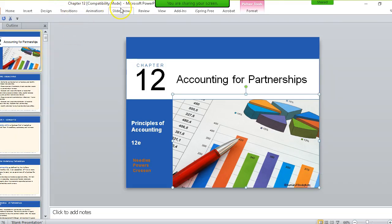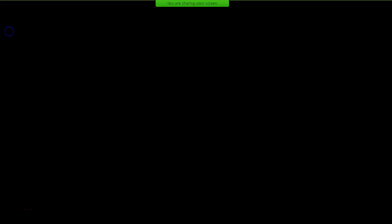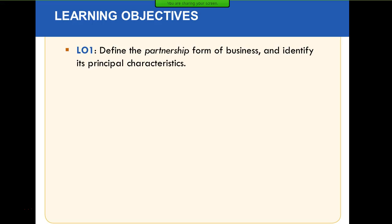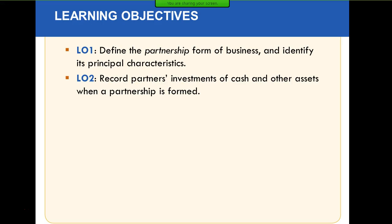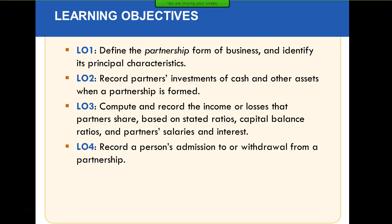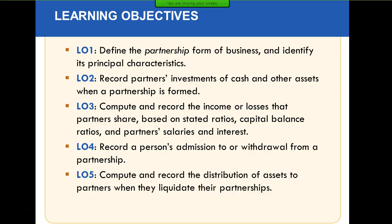We are going to talk about partnerships and go through a bunch of problems just like we have done in class. We'll cover what partnerships are, the benefits of partnerships, how we record the initial capital that partners put into the business, how we record the income or loss for each partner, how we handle a partner getting admitted or withdrawing, and ultimately liquidation.